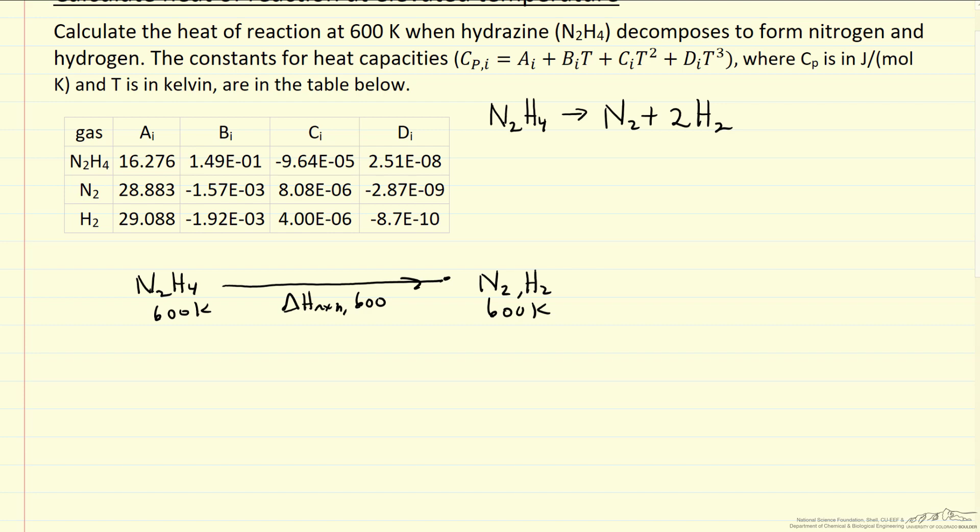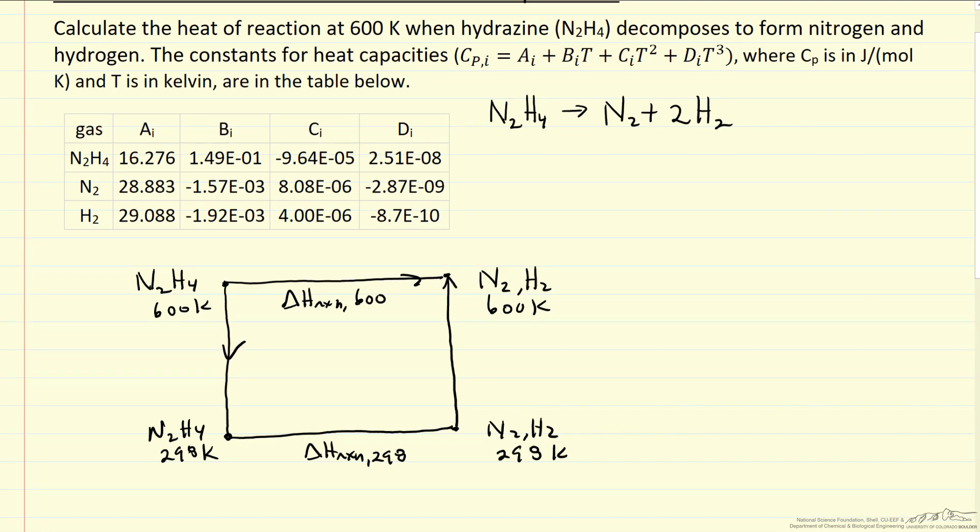The way we do the calculations is to take advantage of this idea of state functions, which means we'll first cool hydrazine down to 298 K. We'll then carry out reaction at 298, and we do that because there are tables available. Now we have nitrogen and hydrogen at 298 Kelvin and we're going to heat that mixture back up to 600. So we essentially have three steps, three delta H's that we want to calculate.